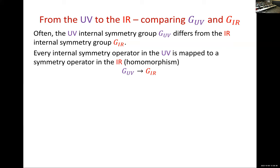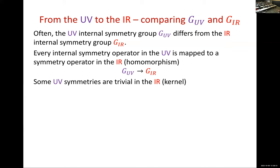That map is a homomorphism, which means some of the symmetries in the UV might be trivial in the IR. For example, if the theory has a decoupled massive complex scalar field, there's a U(1) symmetry that counts the quanta, but since it is heavy, the low-energy observer does not see that symmetry. There could be more subtle examples where the transformation has a kernel. More interesting for our purposes are new symmetries in the IR — symmetries that exist in the IR but are not there in the UV.